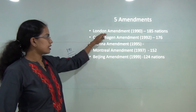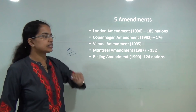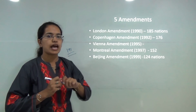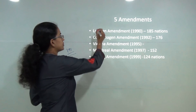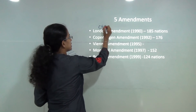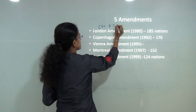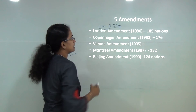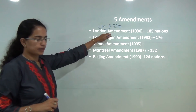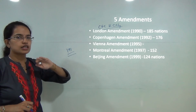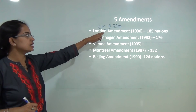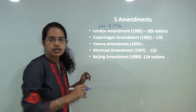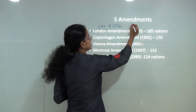The London Amendment's basic idea was to phase out CFCs and carbon tetrachloride (CCl₄) — by 2000 in developed nations and by 2010 in developing nations.